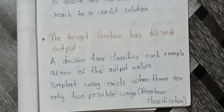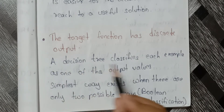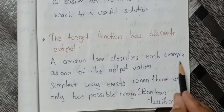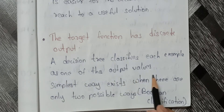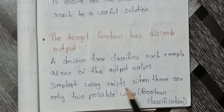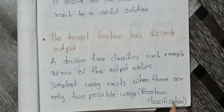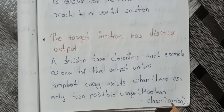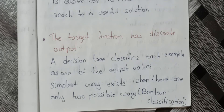Second characteristic: the target function has discrete output. A decision tree classifies each example as one of the output values. The simplest case exists when there are only two possible output values — Boolean classification.